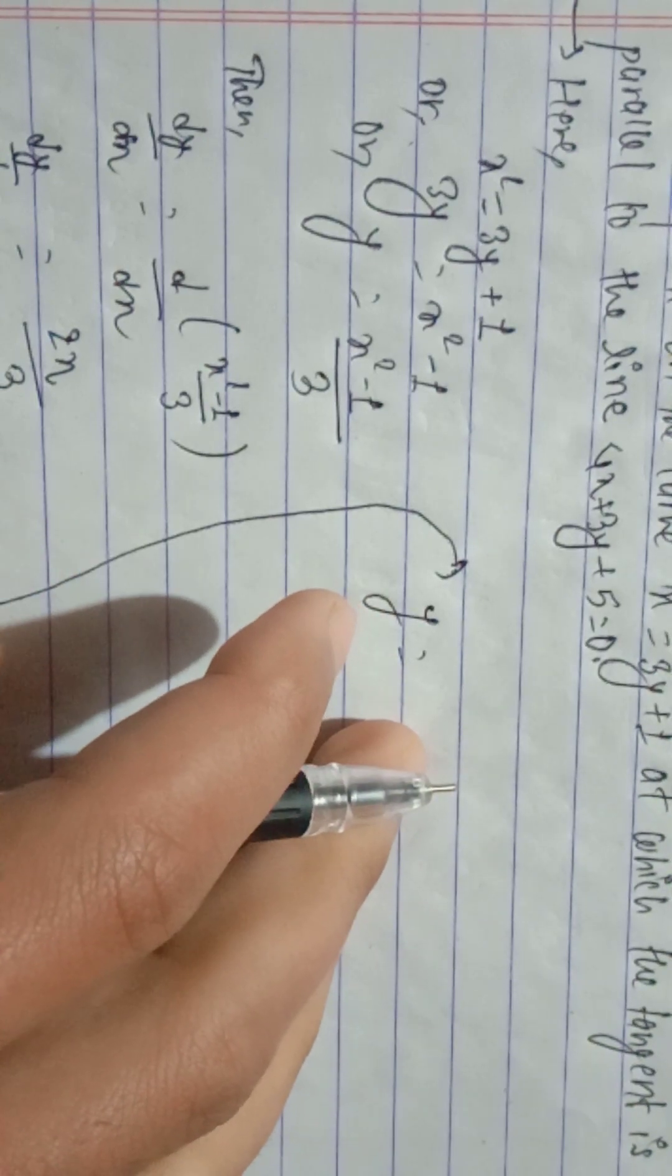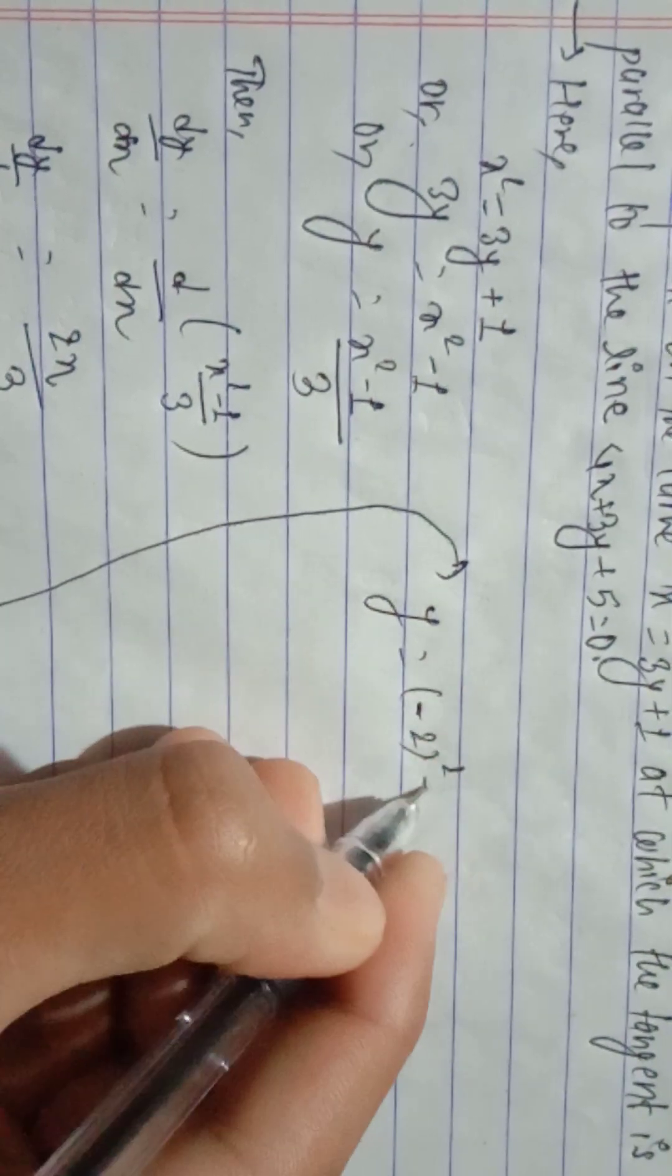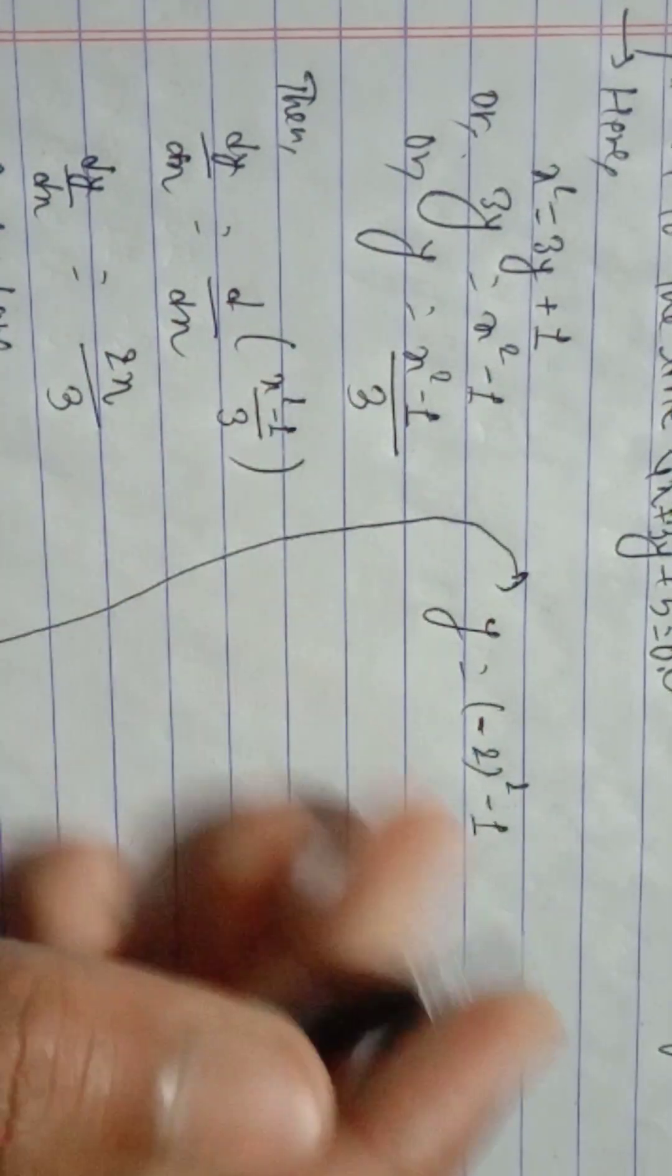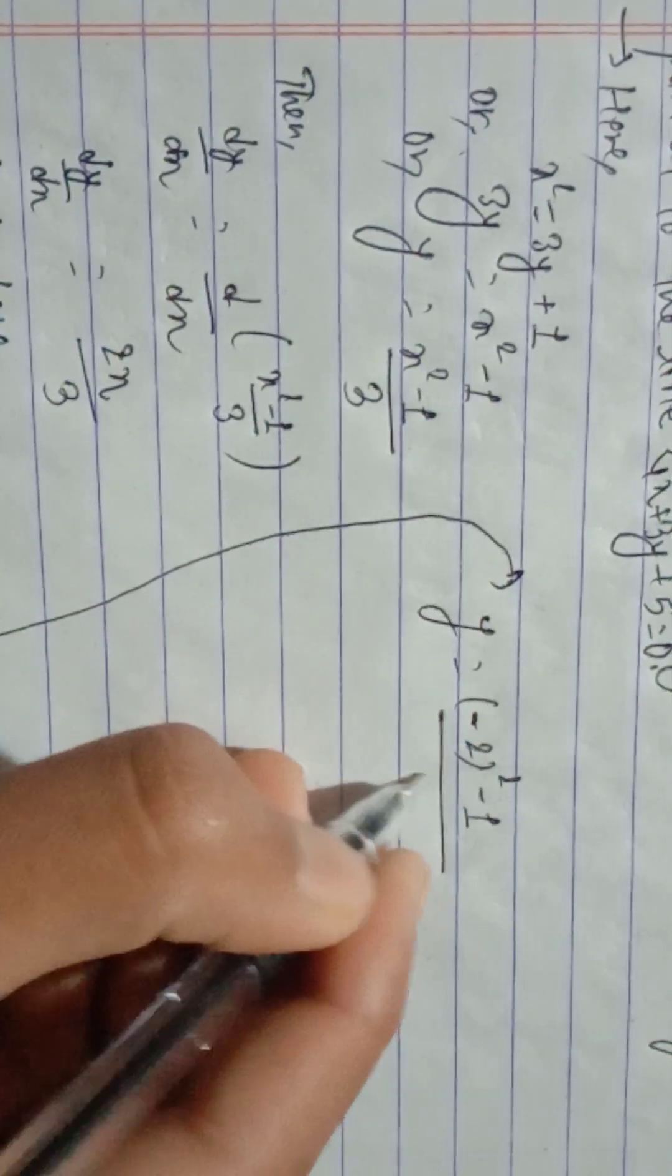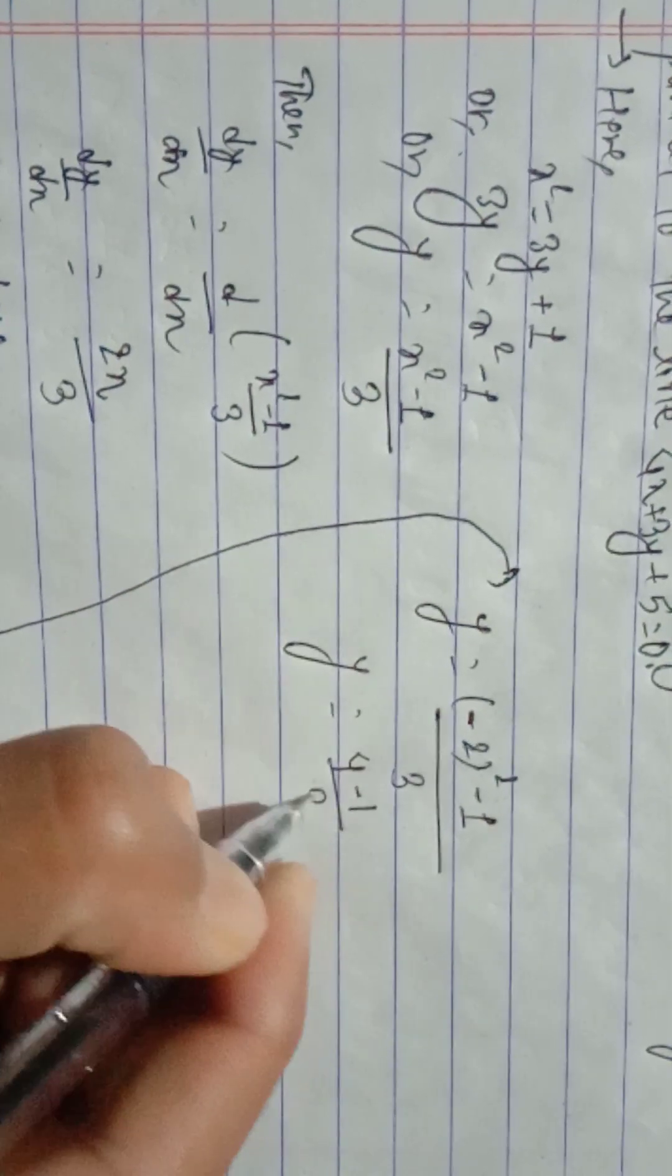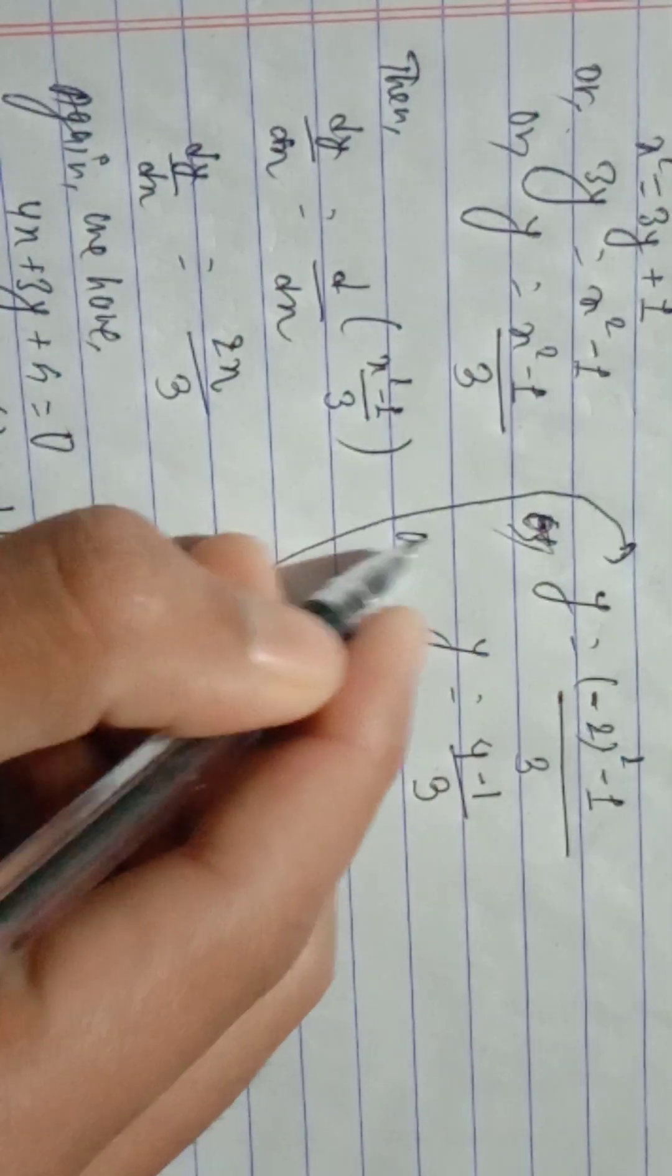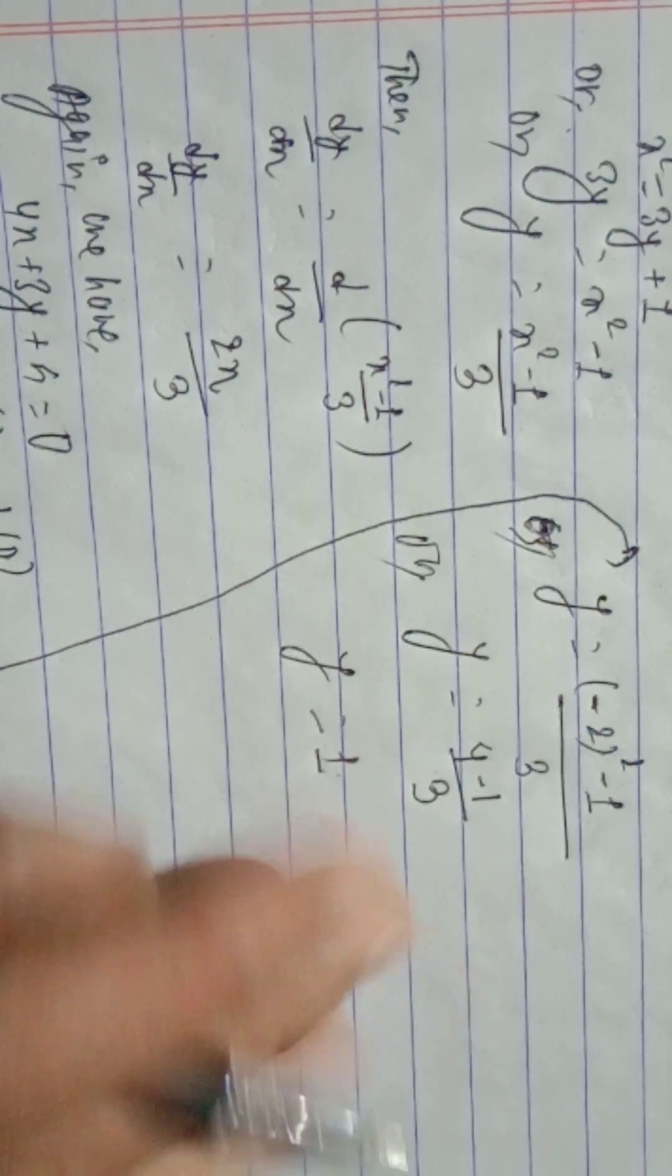Now finding y. y equals x square minus 1 divided by 3. When x equals minus 2, y equals 4 minus 1 divided by 3, which equals 3 divided by 3, which equals 1.